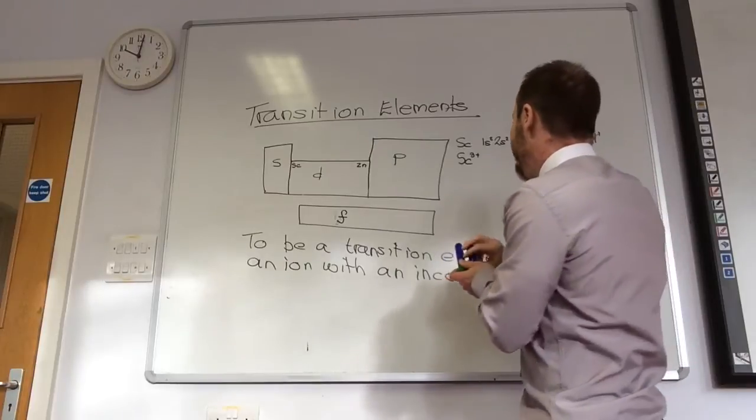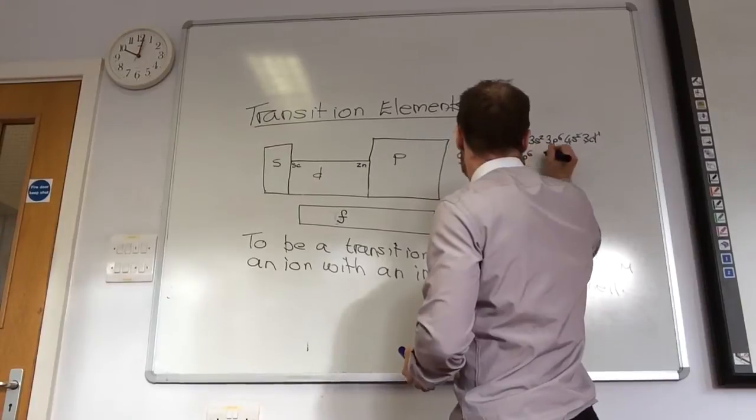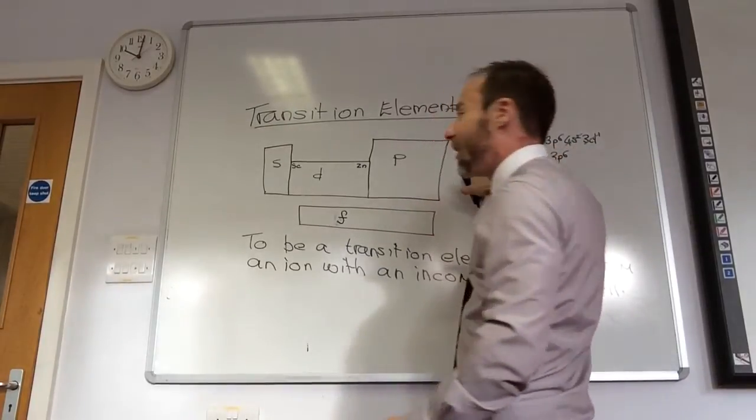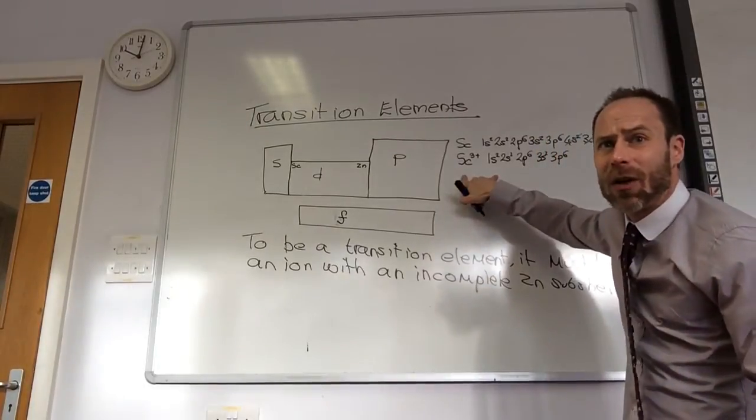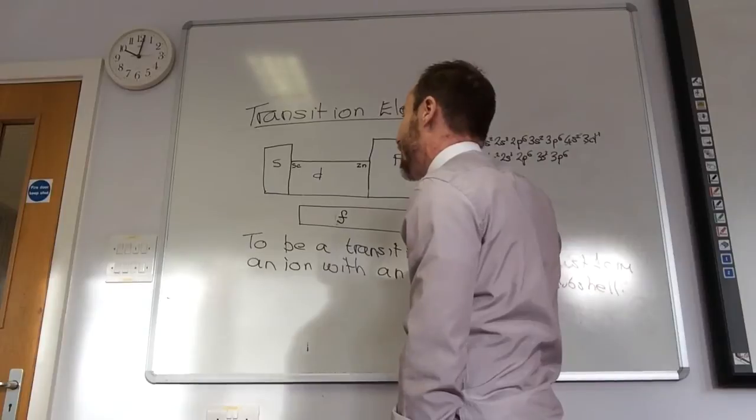So, Scandium 3+: 1s2, 2s2, 2p6, 3s2, 3p6. Does that ion have an incomplete D subshell? No way. He cannot be a transition element.